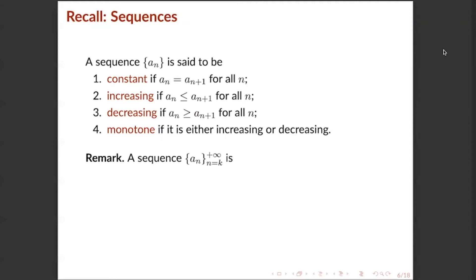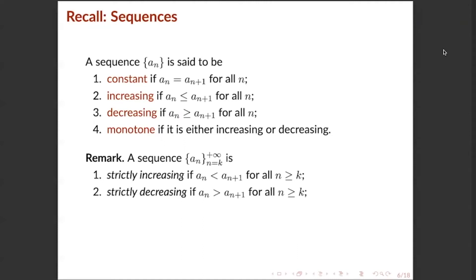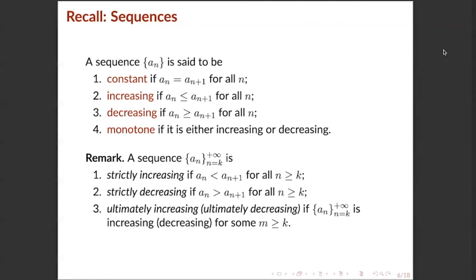Remark: a sequence {a_n} with n ranging from k to +∞ is said to be: (1) strictly increasing if a_n < a_{n+1} for all n ≥ k; (2) strictly decreasing if a_n > a_{n+1} for all n ≥ k; (3) ultimately increasing if the sequence is increasing for some n ≥ k; or (4) ultimately decreasing if the sequence is decreasing for some n ≥ k.